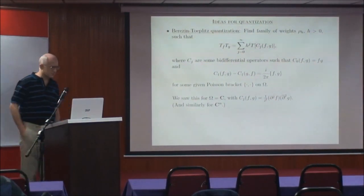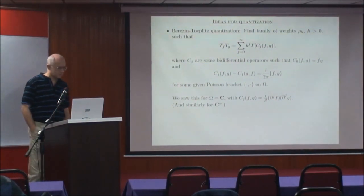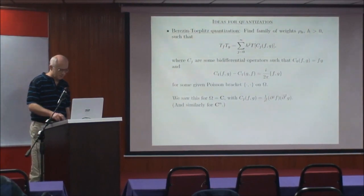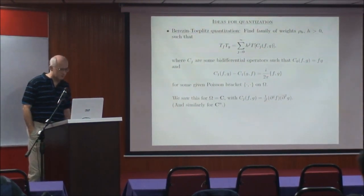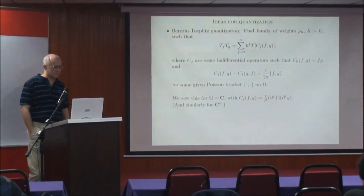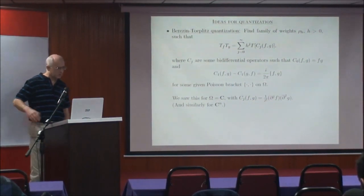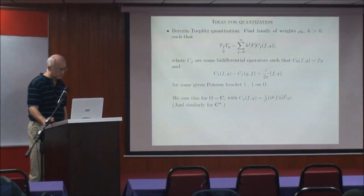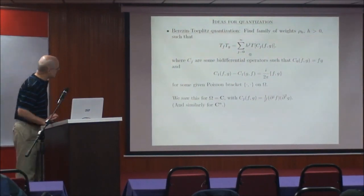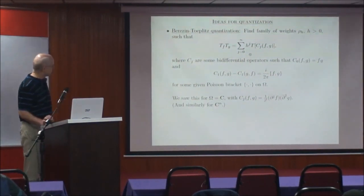One of them was the Berezin-Toeplitz quantization, which means using Toeplitz operators for quantization. In essence, it means we are trying to find a family of weights, both of H, H being interpreted as Planck's constant, which is a positive parameter in our model, which eventually will be allowed to tend to zero. As H tends to zero, we would like to have an asymptotic expansion of the product of two Toeplitz operators into an asymptotic series of single Toeplitz operators.